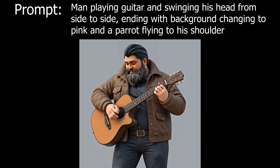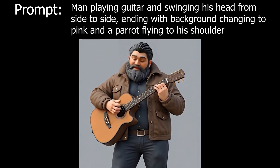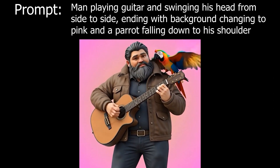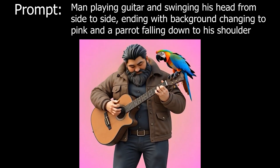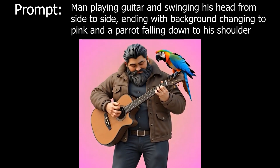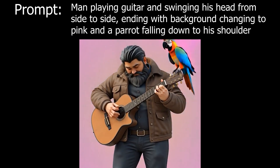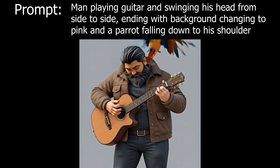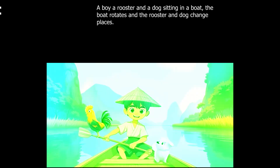Now let me show you how good this AI video model is. It's really sensitive because if I just change the word flying for the word falling down, so now I am asking for the parrot to fall down to the shoulder of our character instead, this is what we get. Isn't this crazy? We even have an amazing animation in the end where the parrot jumps from the end of the guitar to the shoulder of our male character. Results like these make me wonder what we'll have access to in 2 years with AI.